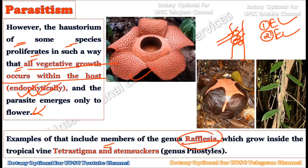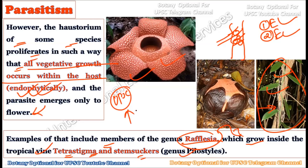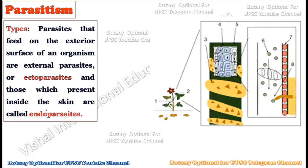A classic example includes members of the genus Rafflesia — known for producing the world's largest flower. Rafflesia plants grow inside tropical vines called Tetrastigma. In this picture, you can see the Tetrastigma plant and the parasitic Rafflesia growing on it. This example can be used in UPSC mains examination because it clearly justifies how parasitism occurs within the plant kingdom — Rafflesia takes all its nutrition from Tetrastigma and completes its life cycle on it.